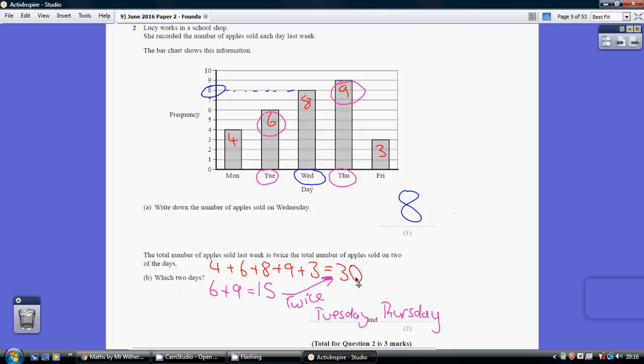So this has to be twice as many of two of the days added together. Well, half of 30 is 15. So which two days added together gives us 15? Well, it's the six and the nine, so it's Tuesday and Thursday.